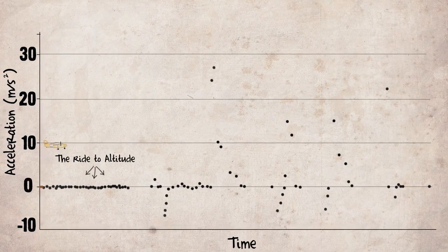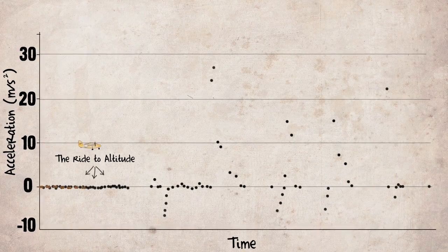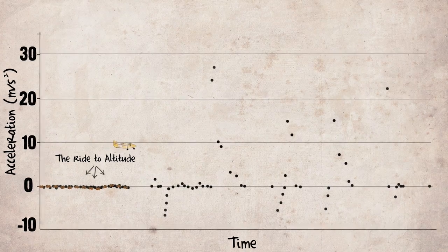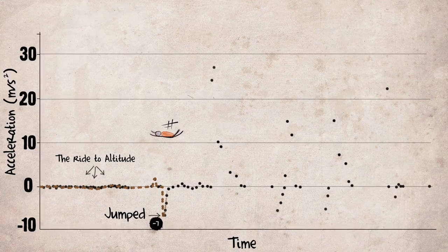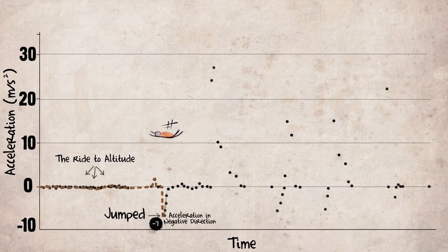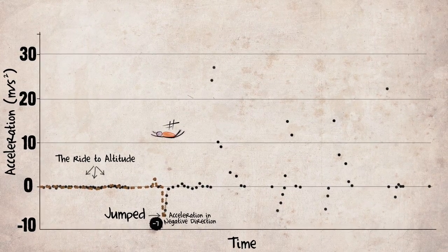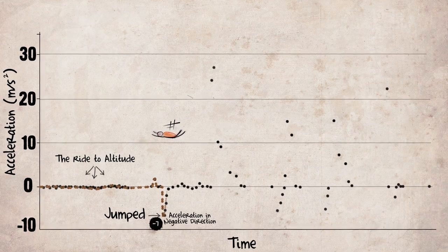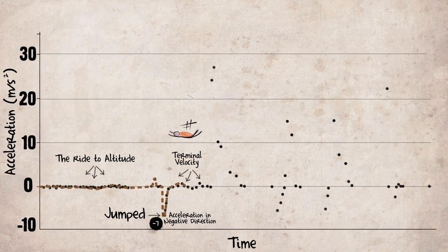For the most part, the ride to altitude was gradual, so I showed zero acceleration. When it was time to jump out of the plane, my acceleration actually peaked at about negative seven meters per second squared — negative because I set the upward direction as positive. In about ten seconds, we hit terminal velocity, so I stopped accelerating.